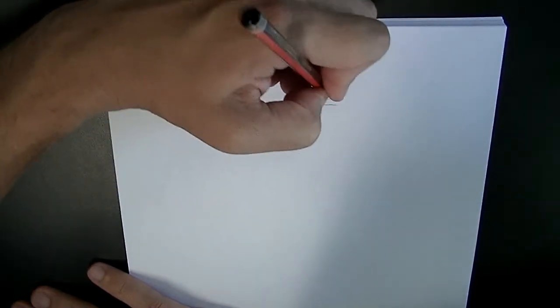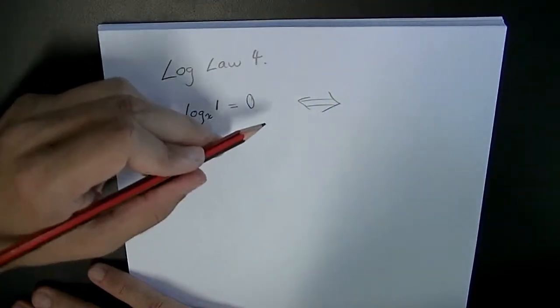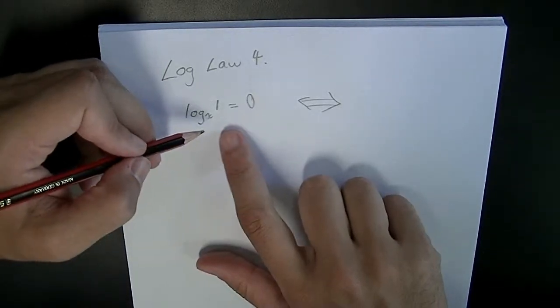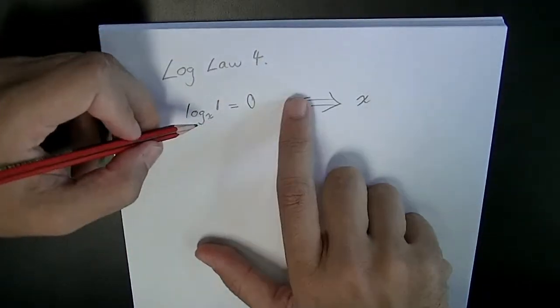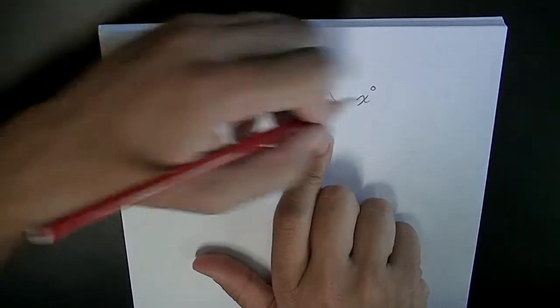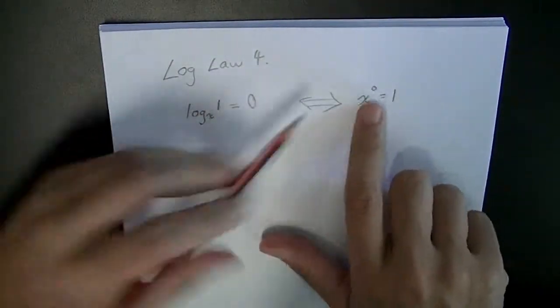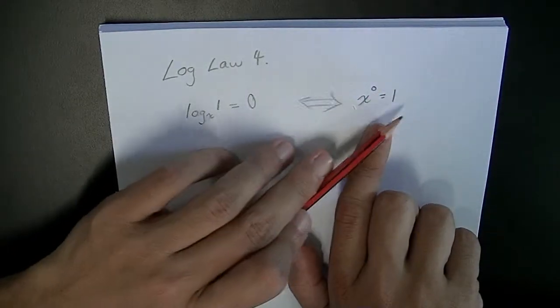Now we can look at that pretty quickly. If we want to look at that in exponential form to show that it's true, we can see that x to the power of 0 is equal to 1. This is an index law that you should be able to remember.